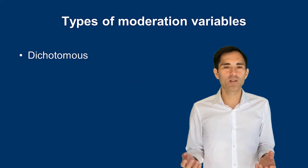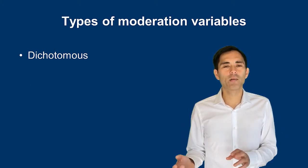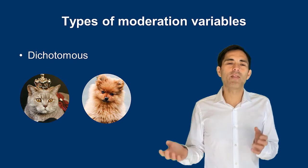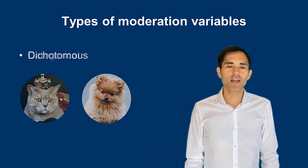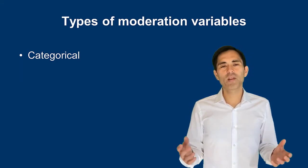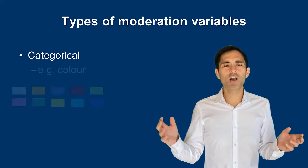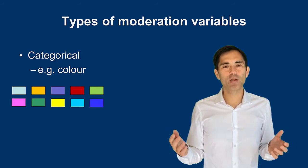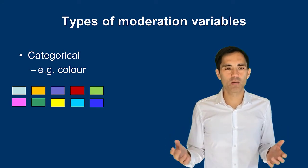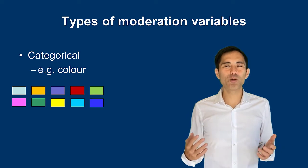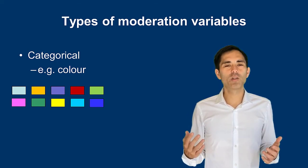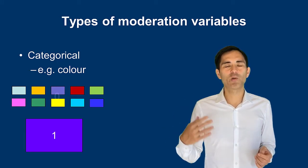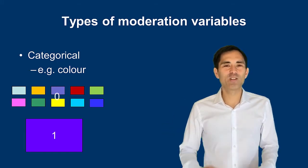We also have dichotomous or binary variables, typically 0 or 1. For example, cats versus dogs — which animals are more liked by people — would be a 0/1 variable. Then we also have categorical variables, such as colors; there may be 10 different colors and you ask which is most liked by consumers. We can't directly enter such a variable into moderated regression analysis, so we compute dummy variables. For instance, if you want to investigate whether blue is a preferred color, you create a dummy: 1 equals blue, 0 equals all other colors, and then you can enter it into the analysis.